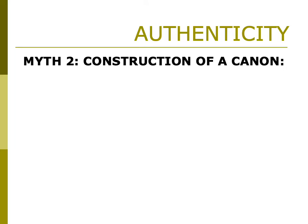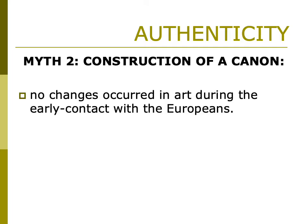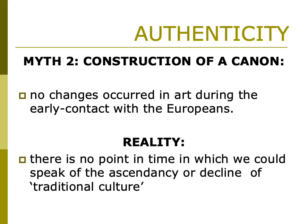Myth two relates to the construction of a canon — this big category of African art and what African art is supposed to be. According to this myth, because we say that there was a before and after scenario of colonialism, we are in fact saying that no changes occurred in art during the early contact with Europeans. The reality is that there is no point in time in which we could speak of an ascendancy or a decline of traditional culture. In other words, if we say that art started changing in Africa after contact with colonists and that this is a loss for traditional culture, then we are saying that before Europeans arrived, nothing happened.